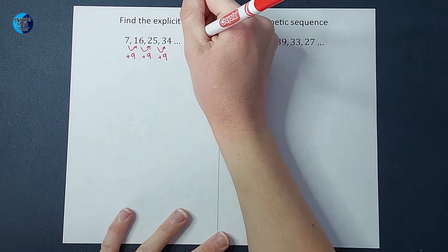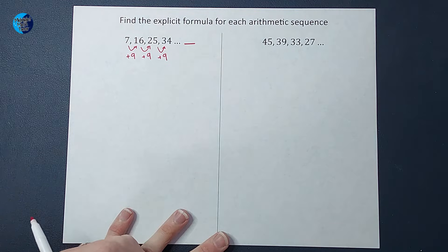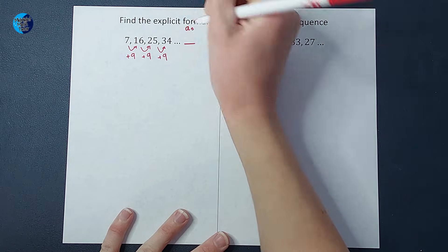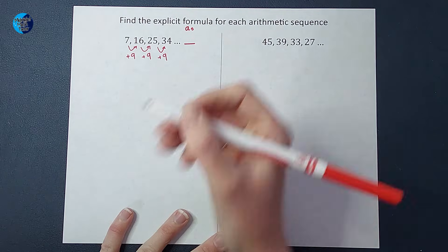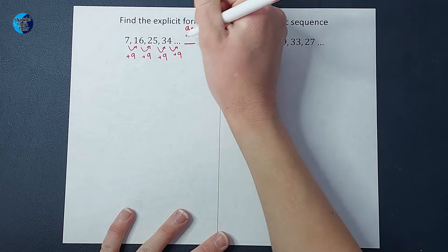So now that we know all of that terminology, we can go ahead and start here. I want to pretend for a second that we are looking for the fifth term here, a sub five. Now all I would do is add nine again, right? Which would give me 43.